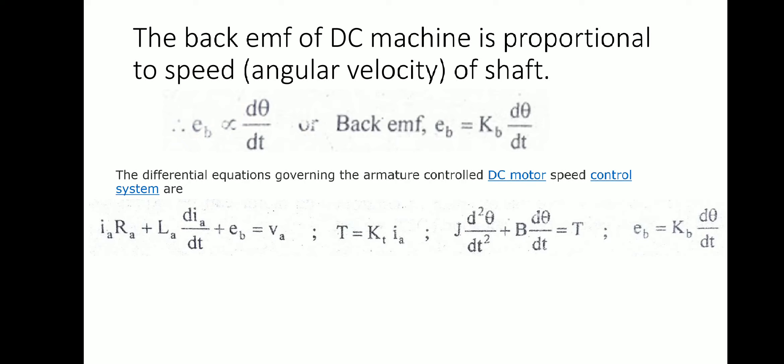Summarizing the system equations: the armature voltage equation is Ia·Ra + La·(dIa/dt) + Eb = Va; the torque equation is T = KT × Ia; the mechanical equation is J·(d²θ/dt²) + B·(dθ/dt) = T; and the back EMF equation is Eb = KB × (dθ/dt).